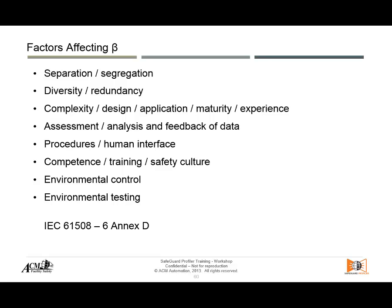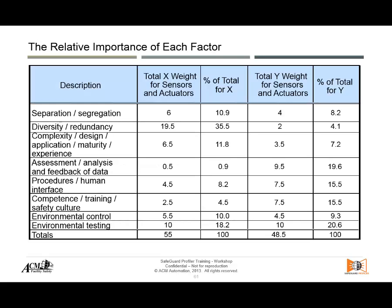Now we are going to go through the tables in Annex D of IEC 61508-6, Part 6. These tables talk about all these factors and how we derive a specific beta factor. There is a relative importance assigned to each factor we discussed — separation, segregation, diversity, complexity, procedures, human interfaces, and so on. There is a weighting system applied by answering those questions. It is very qualitative, and you have to give your best engineering judgment.